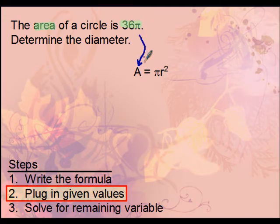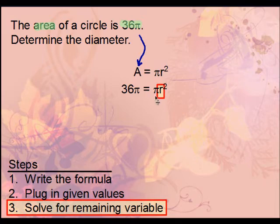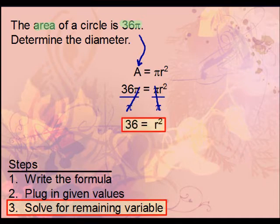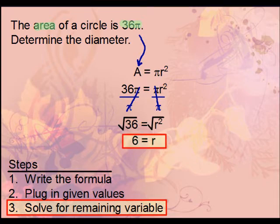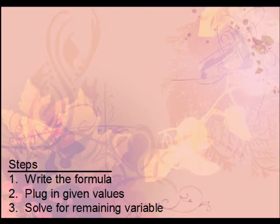Now solve for r. Since pi is being multiplied on both sides, divide it out to reduce the pi, leaving us with 36 = r². Take the square root of both sides — the square root of 36 is 6, so the radius is 6. Since the diameter equals radius times 2, the diameter is 12.